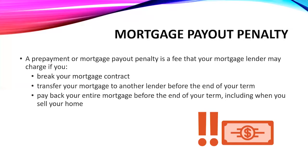Generally, when somebody gets a mortgage — for example, a five-year mortgage — the lender would expect that person to pay the outstanding balance off at the end of the term, so at the end of the five years. But let's say somebody wanted to break that mortgage and transfer to a new lender because they're getting a better rate, as interest rates may have dropped. In that case, in order to break that mortgage, they will have to pay a penalty to the lender, and that's called the mortgage payout penalty.